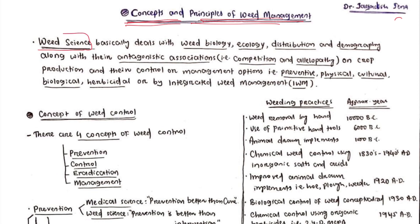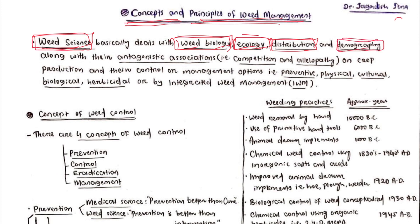What do you understand by weed science? Weed science basically deals with weed biology — what are the systems happening inside the weed, like weed physiology, morphology, dissemination, and reproduction. Then weed ecology — the relationship between weeds and the surrounding crop as well as the environment. Then weed distribution — what is the species distribution, what is the density of the weed. Then demography — the population of the weed. So weed science comprises weed biology, ecology, distribution, and demography, along with their antagonistic association.